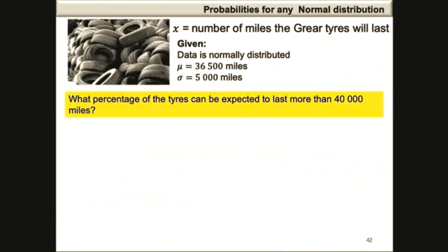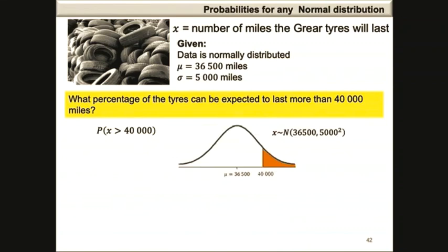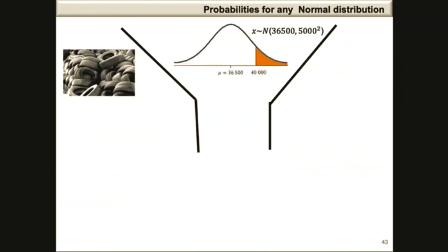What percentage of the tyres can be expected to last more than 40,000 miles? This is represented as the probability that x is greater than 40,000, and on the corresponding graph this is shown as the area shaded to the right of 40,000. Our random variable x is now standardized to obtain the standard normal probability distribution using the z-score formula.